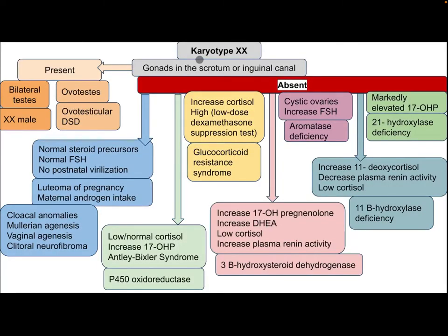Approaching patients with karyotype 46XX in more detail: if gonads are present in the scrotum, inguinal canal, or on ultrasound — bilateral testes indicate XX male; an ovotestis indicates ovotesticular DSD. If there are normal steroid precursors, normal FSH, and no postnatal virilization, this could be luteoma of pregnancy or maternal androgen intake. The differential diagnosis also includes cloacal anomalies, Müllerian agenesis, vaginal agenesis, and clitoral neurofibroma.